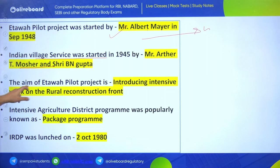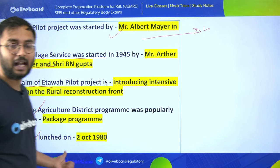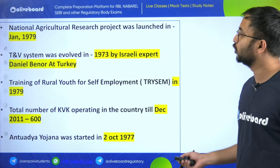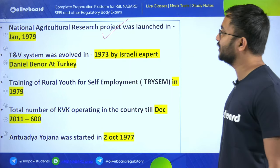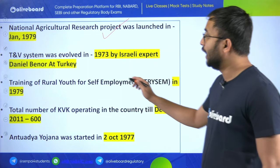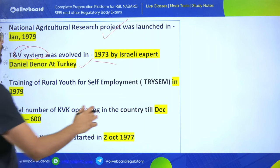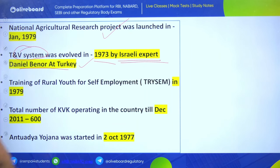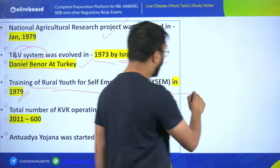Albert Mayer started the Etawah Pilot Project in 1948. Indian Agriculture Service was started in 1945 by Arthur Mosher and Sri B.N. Gupta. The aim of the Etawah Project is intensive work on rural reconstruction. Intensive Agriculture District Program was popularly known as the Package Program. IRDP was launched on 2nd October 1980. National Agricultural Research Project was launched in January 1979.